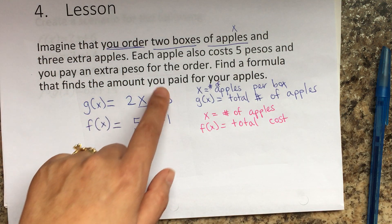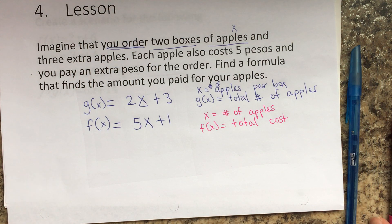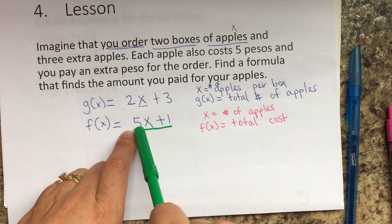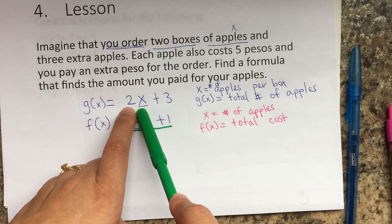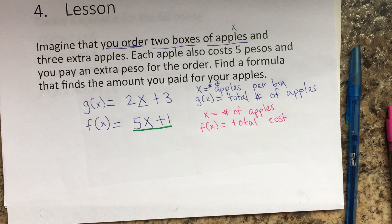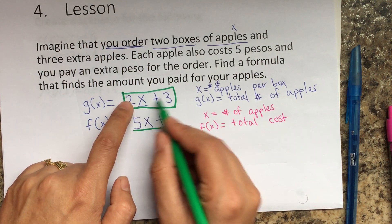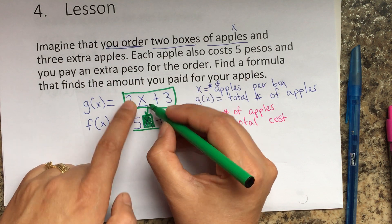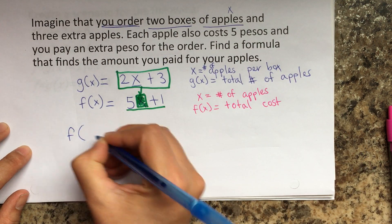Find a formula for the amount you pay for your apples. The company uses f(x) to charge — however many apples you buy times five pesos each, plus one peso for the order. My order is g(x), which is 2x plus 3 — the total apples I'm going to buy. So I insert g(x) into f(x), and that is called f of g of x.